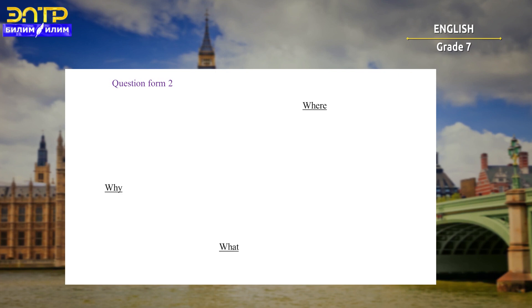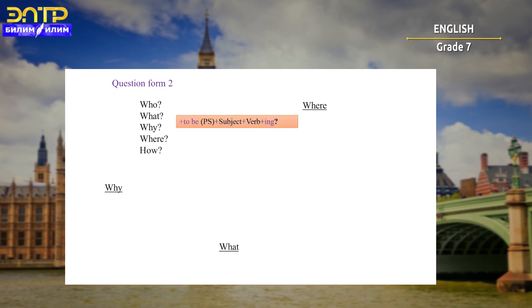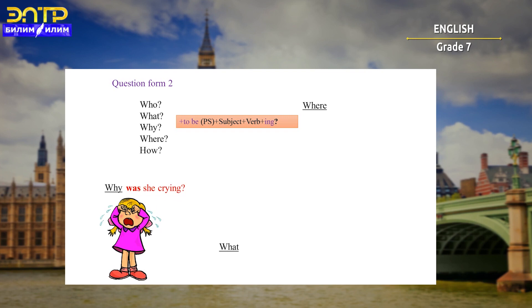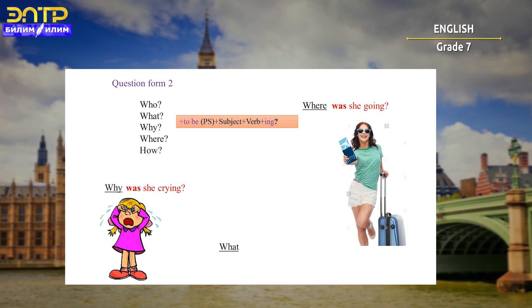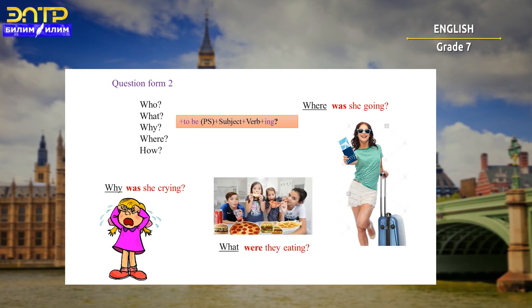Now we have question form two — questions with question words. For example: who, what, why, where, and how. The formula is: question word + to be in past simple + subject + verb with ING + question mark. Here are some examples: 'Why was she crying?', 'Where was she going?', 'What were they eating?'